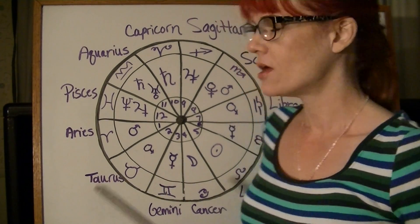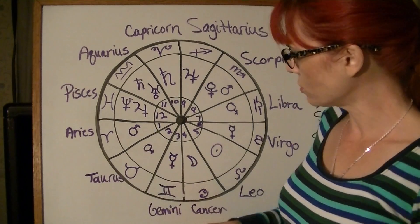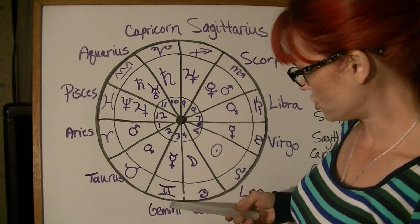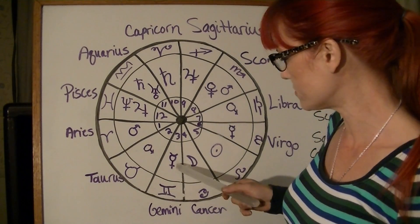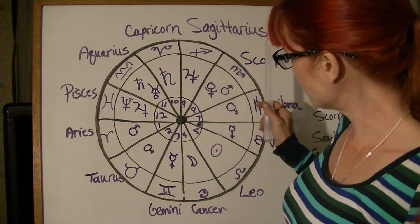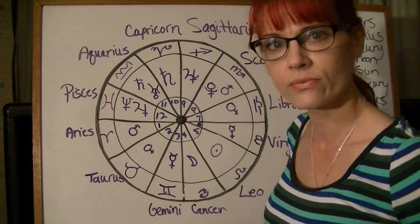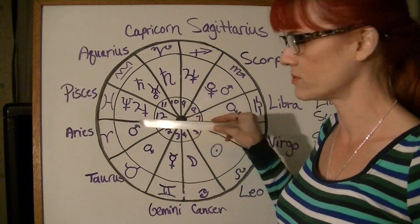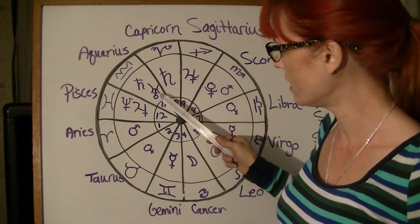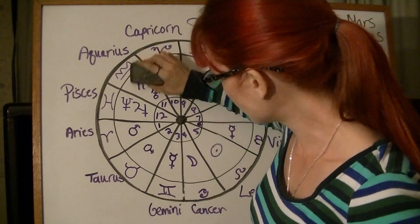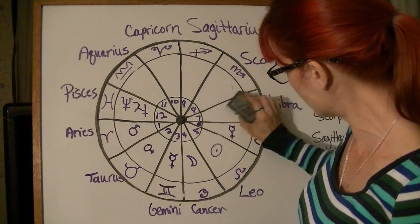Let me find my eraser. So the lord of Gemini — the lord of the third house in this birth chart — is Mercury. The ruler of the ninth house is Jupiter in this birth chart, because this is an Aries rising birth chart. The rulers of Aquarius are Saturn and Uranus.